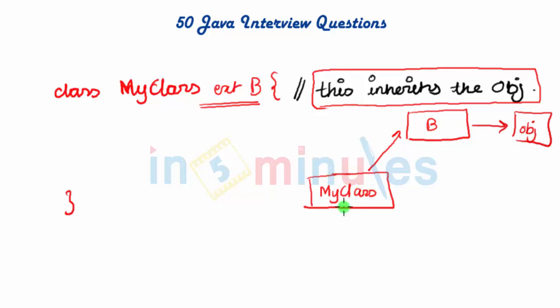So when I say that MyClass is extending from object class, it is via the B class, and this is how you solve this problem.